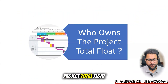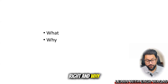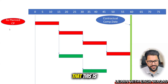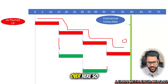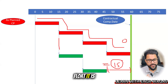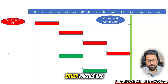Who owns a project's total float? Let's break it down step by step. First, what is total float? Looking at this Gantt chart, you can see the critical path, which has zero float. The activities that start and end off the critical path have flexibility — in this example, 15 days. That flexibility is the total float: it is the number of days of flexibility available on non-critical activities.